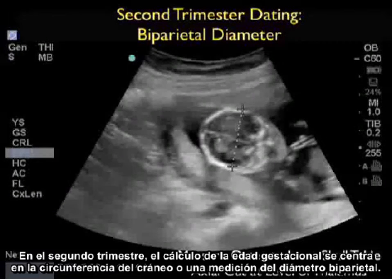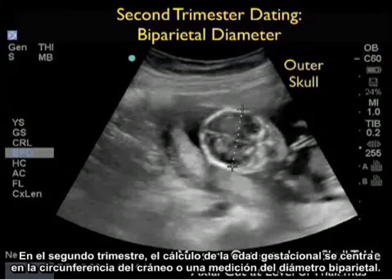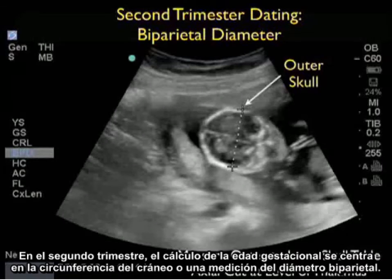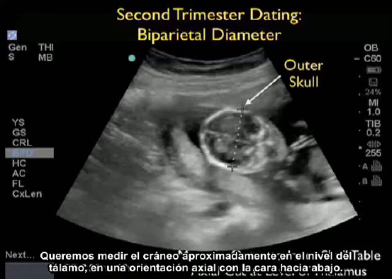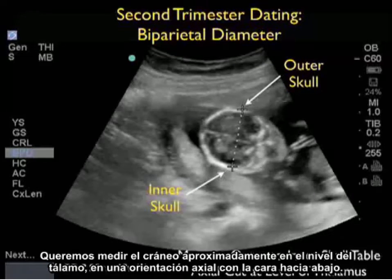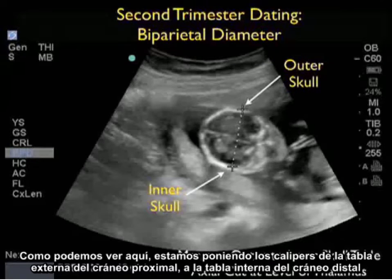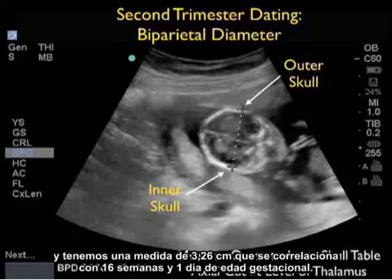In the second trimester, dating of gestational age focuses on skull circumference or measurement of the biparietal diameter. We want to measure the skull at about the level of the thalamus in an axial orientation with the face down. Here we're placing the calipers from the outer skull table proximally to the inner skull table distally, and we have a measurement of 3.26 centimeters correlating to a 16-week, one-day gestational age.